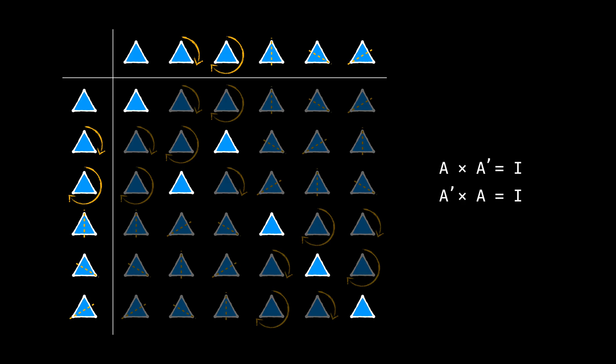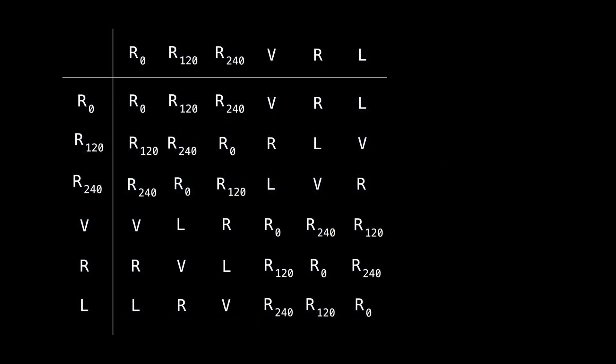Since working with shapes is hard, let's use symbols instead. So now in our table, all rotations are specified by R with a rotation degree, and the flipping actions are shown by from which corner the flipping line is passing.